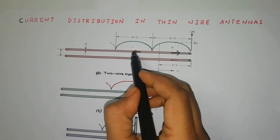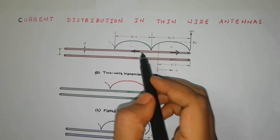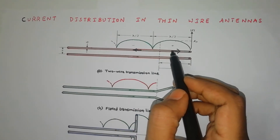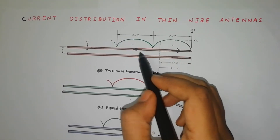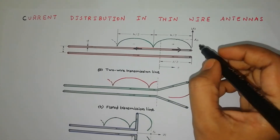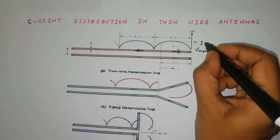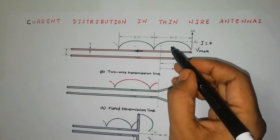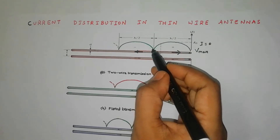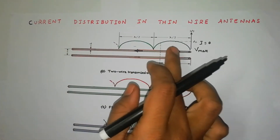If you observe clearly, the flow of current directions are exactly opposite. Even though they have the same magnitude I-naught, they are in opposite directions. So the net current becomes equal to 0 here. At the open end you have maximum voltage but current is 0. At the feed point you have maximum current but voltage is 0. Then maximum voltage but current is 0 again — this entire pattern repeats.